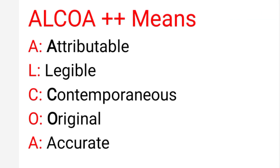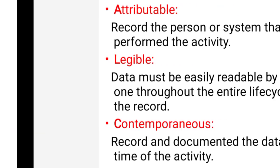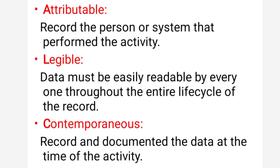ALCOA++ means: A for Attributable, L for Legible, C for Contemporaneous, O for Original, A for Accurate. The first plus means Complete, Consistent, Enduring, and Available. The second plus means Traceability. Now let's discuss the whole ALCOA++ in detail.